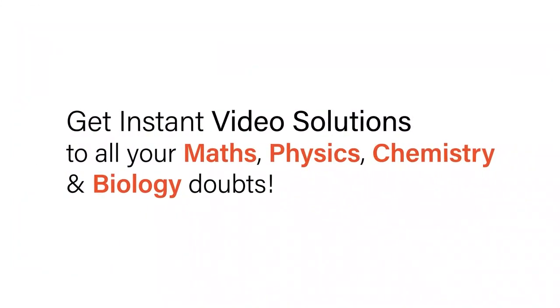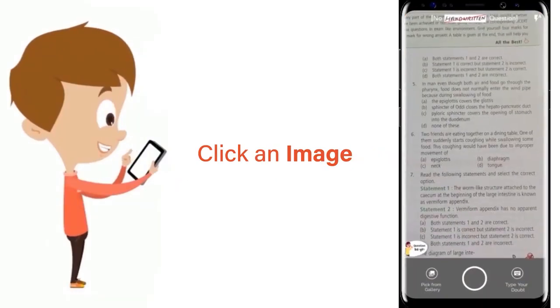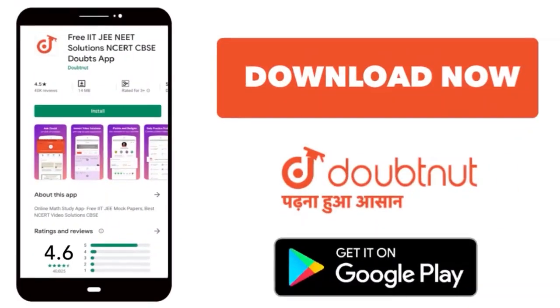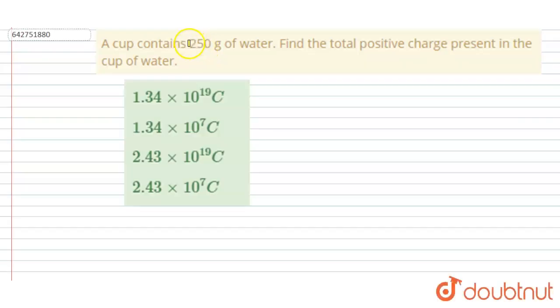With Doubtnet, get instant video solutions to all your math, physics, chemistry, and biology doubts. Just click the image of the question, crop it, and get an instant video solution. Download Doubtnet app today. Hello everyone. A cup contains 250 grams of water. Find the total positive charge present in the cup of water.